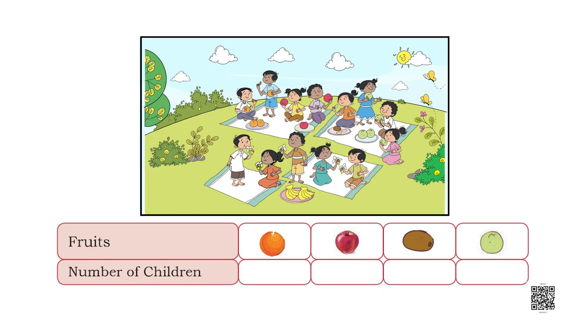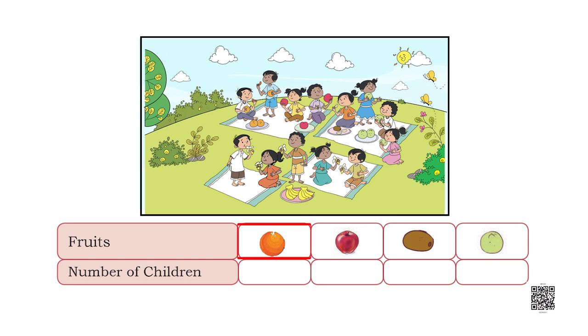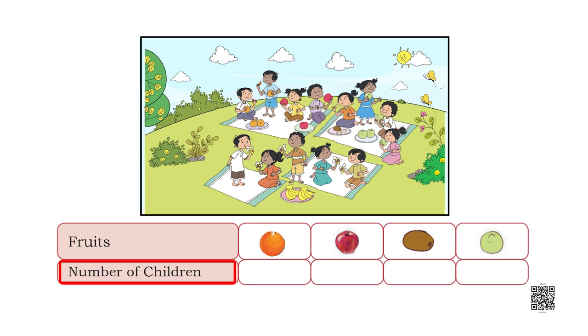Let us complete the table related to this picture and fill in the blanks. There are two rows in this table, each with five columns. The first row has fruits listed — orange, apple, kiwi, and guava. The second row shows the number of children, with all four columns blank. Keeping this table in mind, you have to answer some questions.